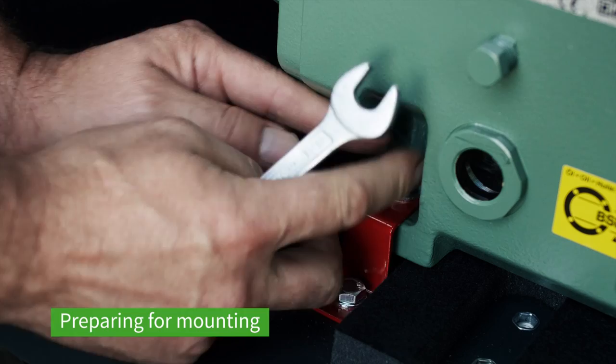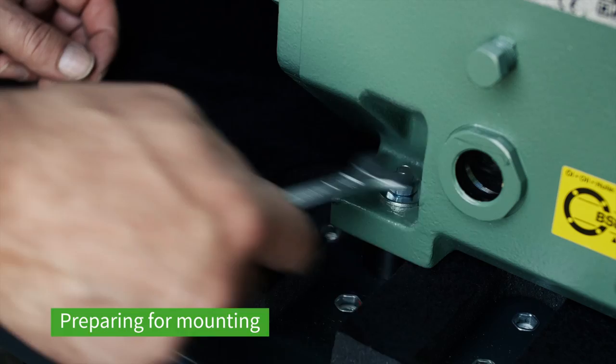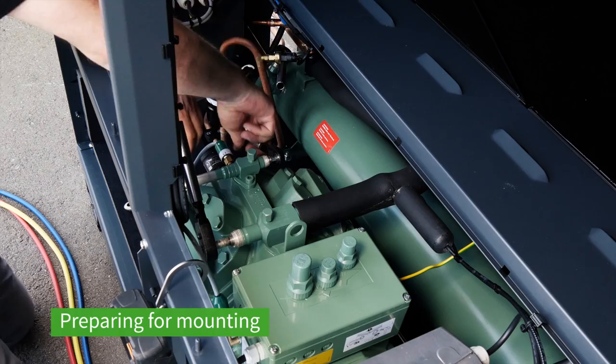Remove the transport locks from the Echoline Verispeed compressor. Thanks to the easily accessible and prepared line connections of the Echostar, the pipes are very simple to mount.